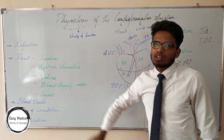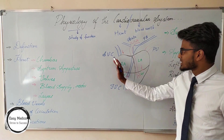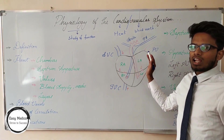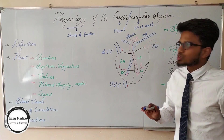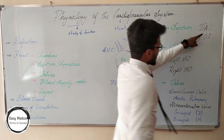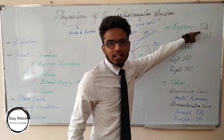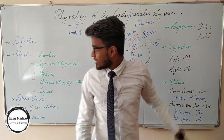Septum is the division which divides the right side and the left side of the heart. There are two septums: the Interauricular Septum and the Interventricular Septum.